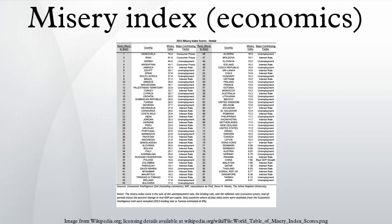Variations on the misery index: Harvard economist Robert Barro created what he dubbed the Barro misery index in 1999. The BMI takes the sum of the inflation and unemployment rates, and adds to that the interest rate, plus the shortfall between the actual and trend rate of GDP growth.